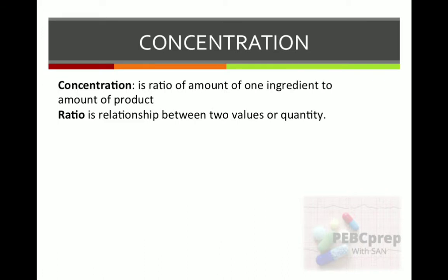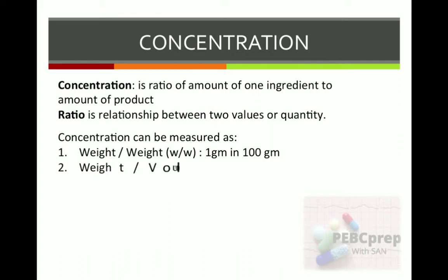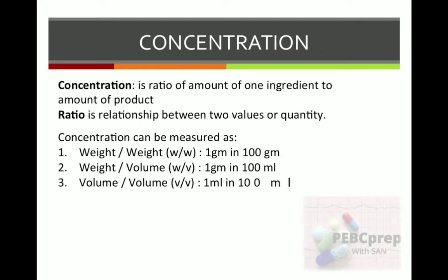Concentration can be measured as weight by weight: one gram of any substance in 100 grams of another substance — this is the ratio of two substances. Second is weight by volume: one gram of one ingredient in 100 ml of solvent. Third is volume by volume: one ml in 100 ml.